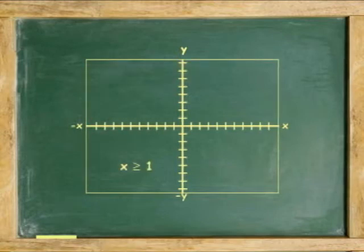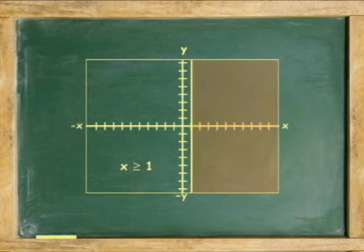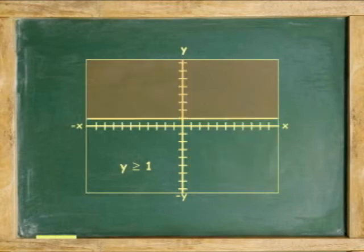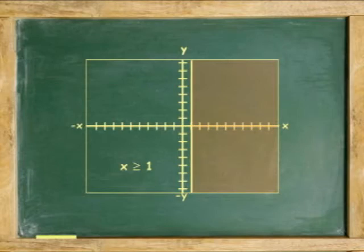Another example: graph the inequality x is greater than or equal to 1. Graphed in two dimensions, an inequality with only one variable is either vertical, x only, or horizontal, y only. In this case, it is vertical passing through points x equals positive 1.